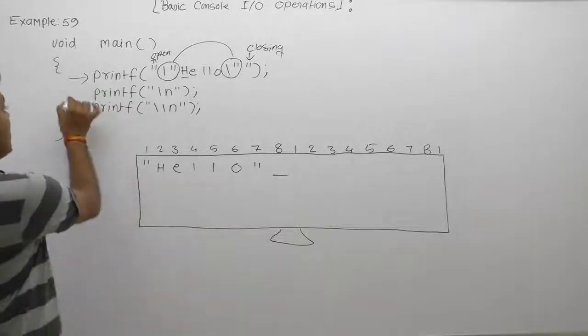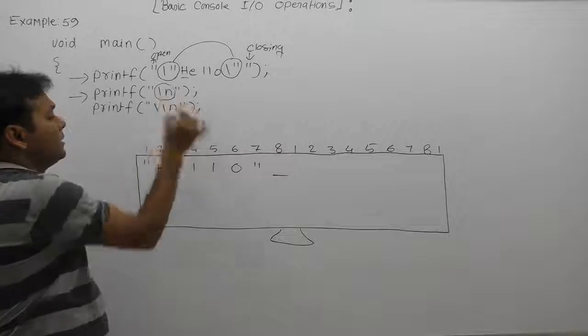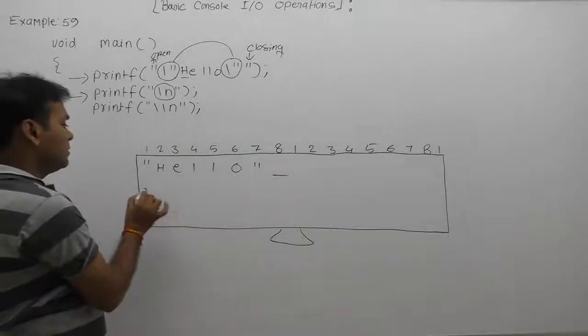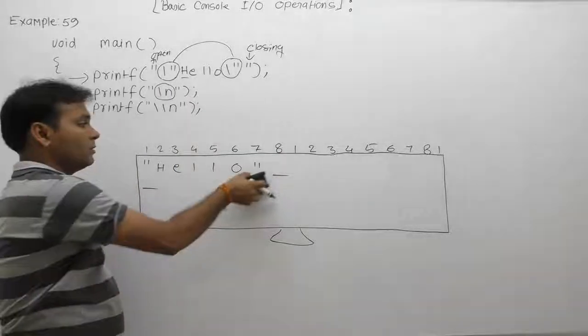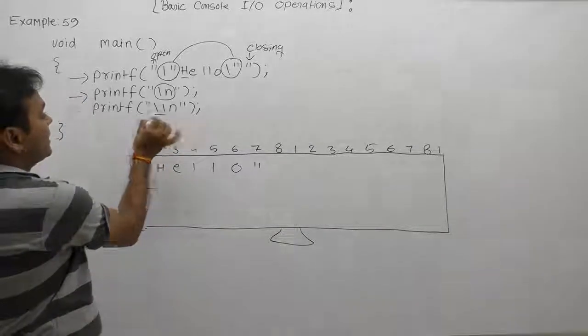Next one, according to second print tab, second print tab can directly slash n pass here. Slash n according to cursor sends to the next line beginning position. Again, we are supplying slash slash.